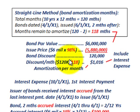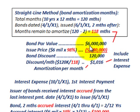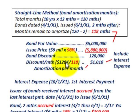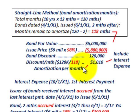To determine our amortization on a monthly basis: our bond par value is $6 million. The issue price is 98% of par, which is $5,880,000. The difference gives us a bond discount of $120,000 that we have to amortize on this bond. Looking at the discount on a monthly basis, we have $120,000 divided by the 118 months remaining, which gives us a discount amortization of $1,016 per month. That's what we're going to amortize per month and include in the interest expense.